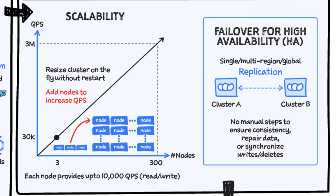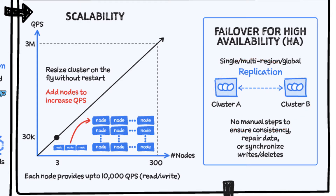It offers high availability with SLAs of 99.5% for zonal instances, and it is strongly consistent in a single cluster. Replication adds eventual consistency across two clusters and increases the SLAs to 99.99%, so if that's your need, go for a replicated cluster. Replication for Cloud Bigtable enables you to increase the availability and durability of your data by copying it across multiple regions or multiple zones within the same region.